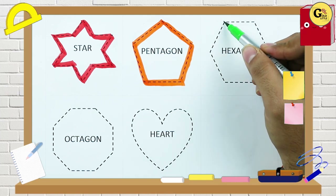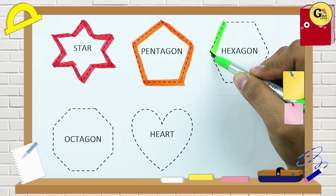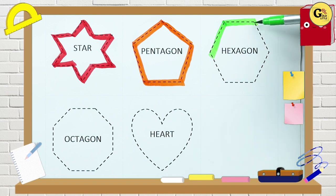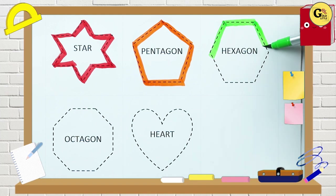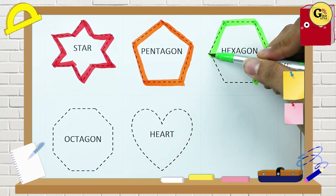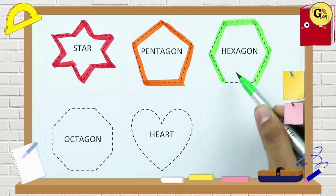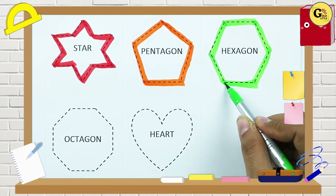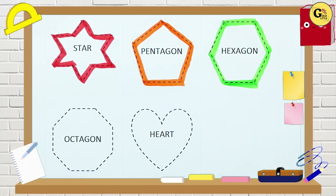Hexagon — one line, two line, three line, four line, five line, six line — hexagon.